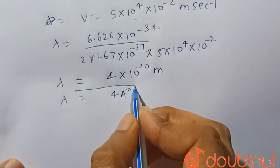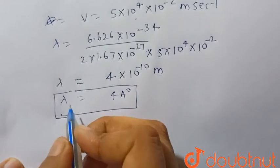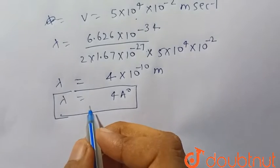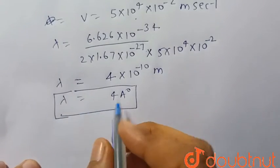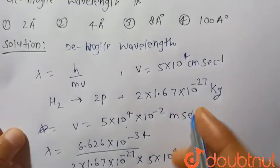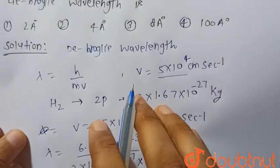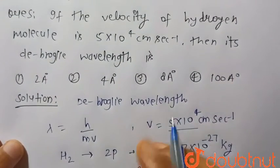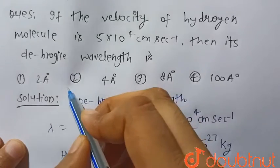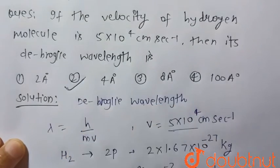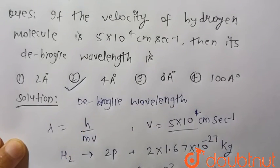Hence the de Broglie wavelength of the hydrogen molecule is 4 angstrom when it is moving with this velocity. Consider the given options - it is given in option number second. Hence option second is the correct choice. Thank you.